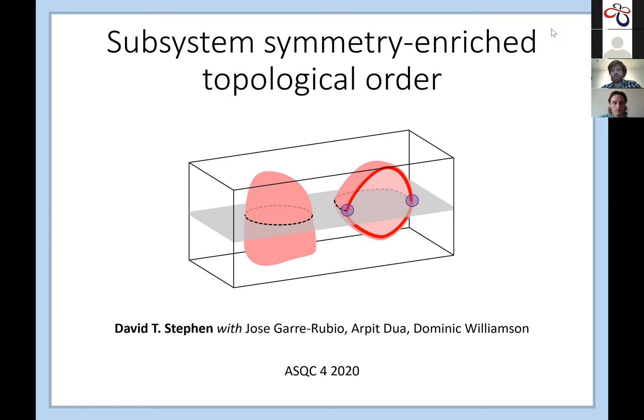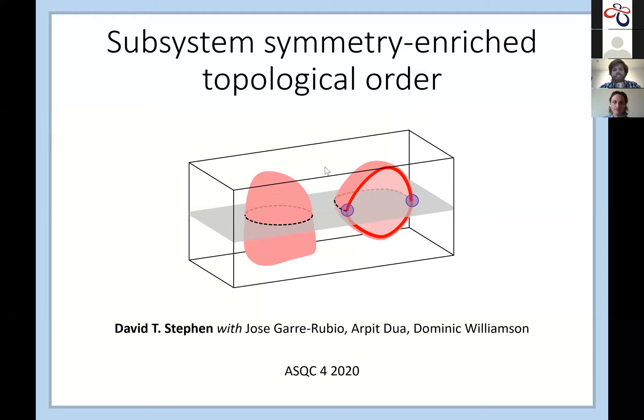I wanted to talk about something very related to what Trithep just discussed: the idea of creating new kinds of topological models using ingredients from existing ones, and seeing what kinds of interesting properties they have. Pretty much everything I want you to take from this talk is encoded in one picture, and I hope you'll understand it by the end. I aimed to make the talk somewhat accessible, so hopefully you can follow along with the pictures.